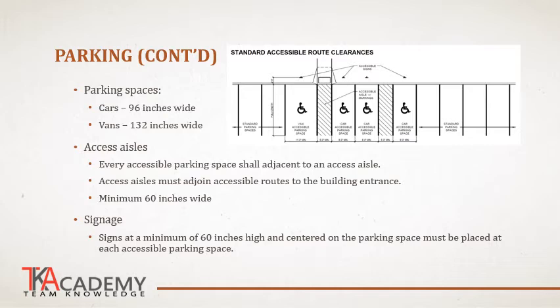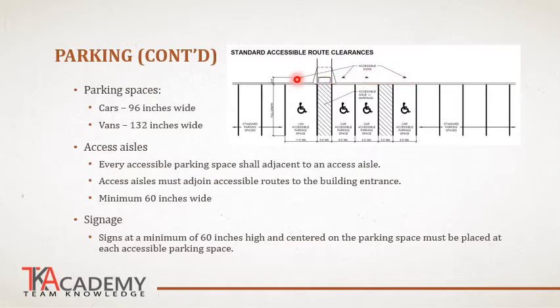There is also a requirement for signage. Every accessible stall must have a sign indicating it is reserved for accessible use. These are typically pole signs with a minimum height requirement of 60 inches, centered on each accessible parking space. These signs are set back a minimum of 30 inches away from the curb, because most vehicles' wheels will hit the front curb and overhang up to 30 inches, so the signs must be set back to ensure the vehicle's bumper does not hit them. There are other requirements for signs — the size, the infographic, the colors — which will be discussed later in the presentation.